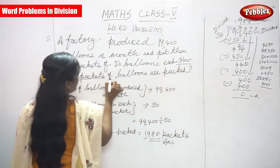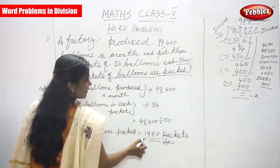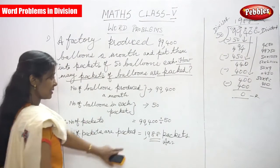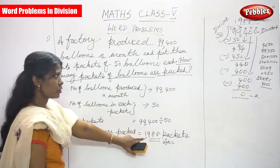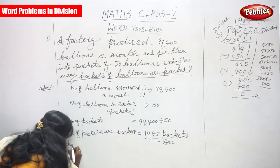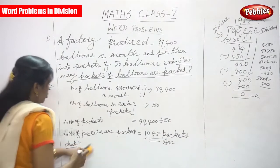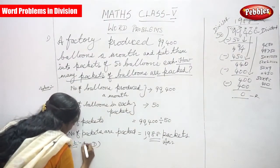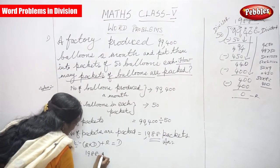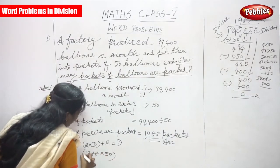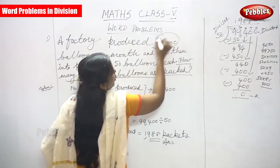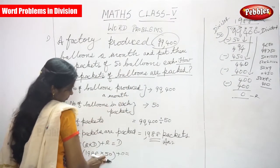How many packets of balloons are packed? So 1,988 packets of balloons are packed in the factory. This is the right answer. But whether the answer is right or wrong, you have to do the check method. Check means: quotient into divisor within the bracket plus remainder equals dividend. Quotient 1,988 into divisor 50 plus remainder 0 should give you 99,400.